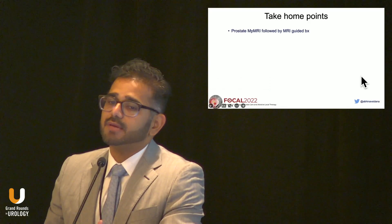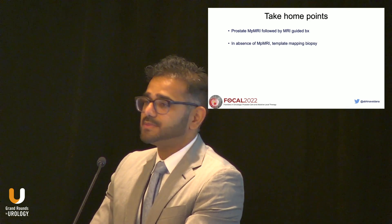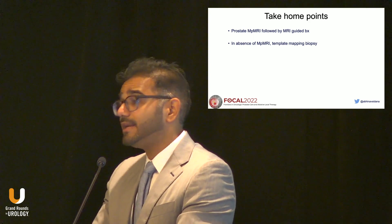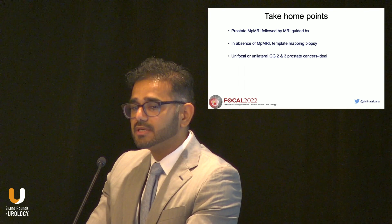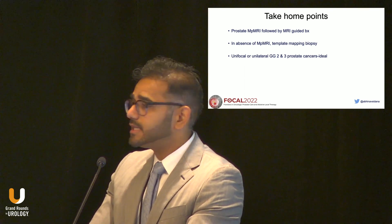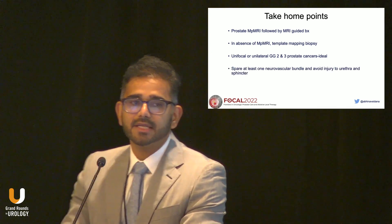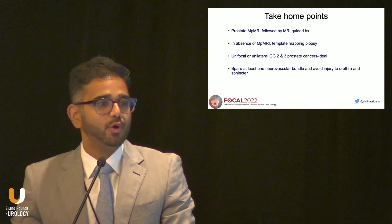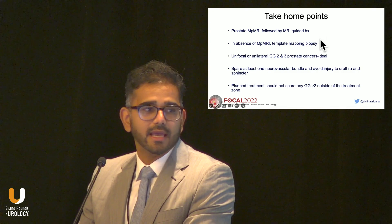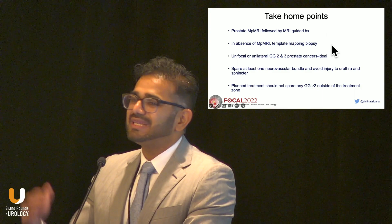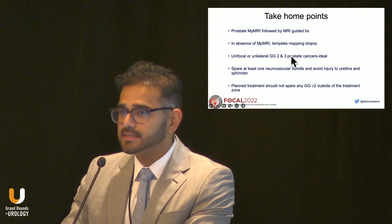The take-home message: get a prostate MRI followed by an MR-guided biopsy — that is the core of focal therapy candidate selection. If MRI is unavailable, template mapping biopsy with cores every 5 mm provides 95% accuracy for location and detection of clinically significant cancer. The ideal patient to start with is grade group 2 or 3, unifocal, unilateral disease. Ultimately, if you can spare one neurovascular bundle and avoid injury to the sphincter and urethra, the patient is likely a focal candidate. Any focal ablation leaving grade group 2 or higher disease untreated is not ideal — the plan should be to destroy all grade group 2 or higher disease with focal energy.